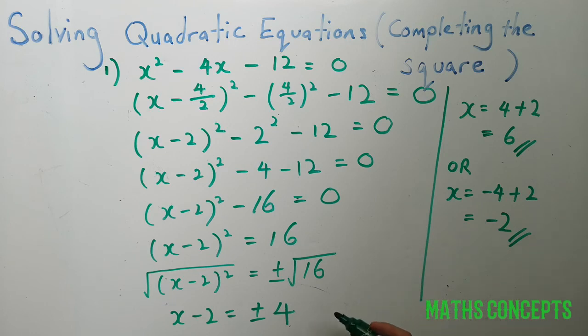And now we can solve x squared minus 4x minus 12 equals 0, which gives us x equals to 6 and x equals to negative 2. Hope that in this video you have learned how to complete the square. Thanks for watching.